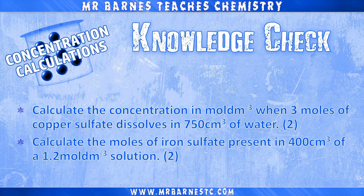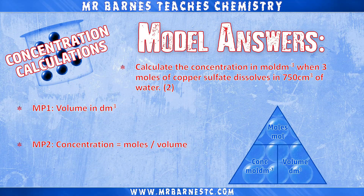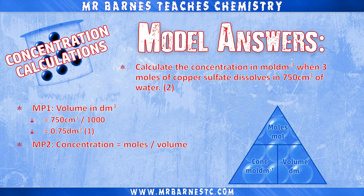That's everything you need to know for this video. Let's have a look at a few questions — pause the video and have a go. This question asks you to calculate the concentration in moles per decimetre cubed. The first mark is for converting the volume: divide 750 by 1000, giving a volume of 0.75 decimetres cubed. The second mark is for the concentration calculation — moles divided by volume — so 3 divided by 0.75 gives 4 moles per decimetre cubed.